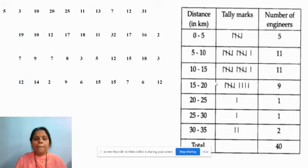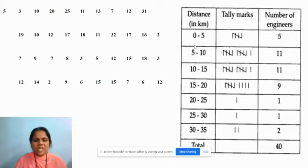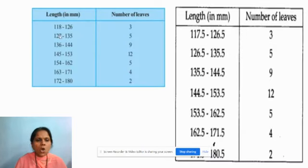But before doing a histogram, we need to check two things. One is whether the class intervals are continuous or non-continuous. This is an example of a continuous class interval — where the upper limit of a particular class interval and the lower limit of the next class interval are one and the same. This is called a continuous class interval. And this other one is a non-continuous class interval.